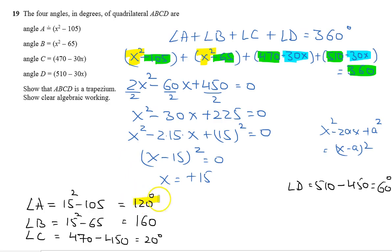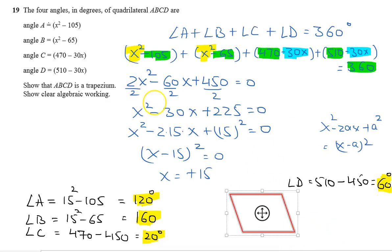So our angles are 120, 160, 20 and 60. We have to show that this is a trapezium. Let's see this figure. Suppose this is angle B, which is 160, this is angle C, that is 20, angle A is 120.